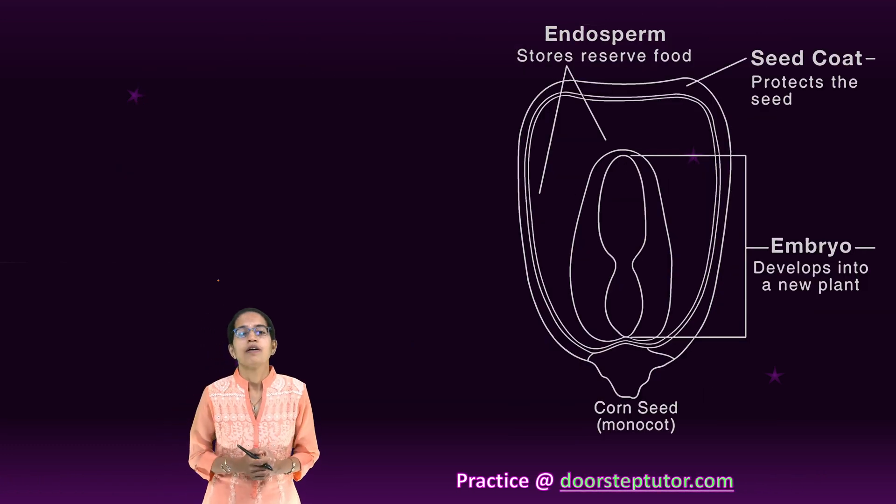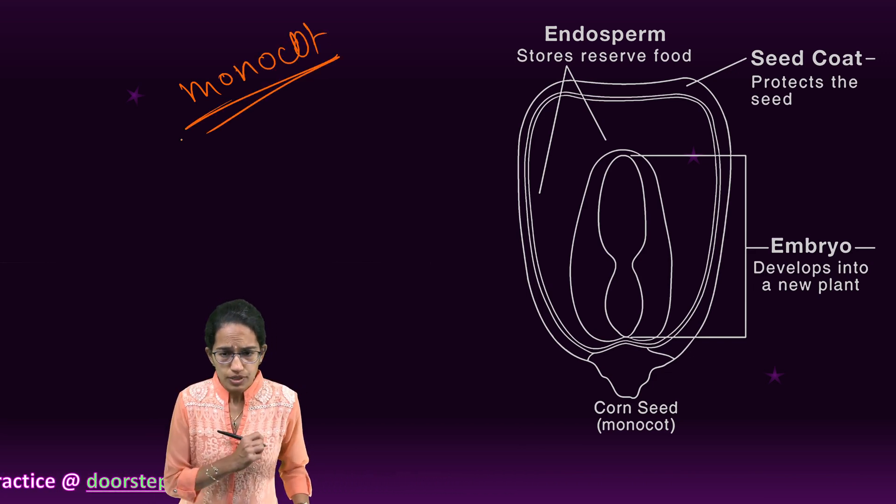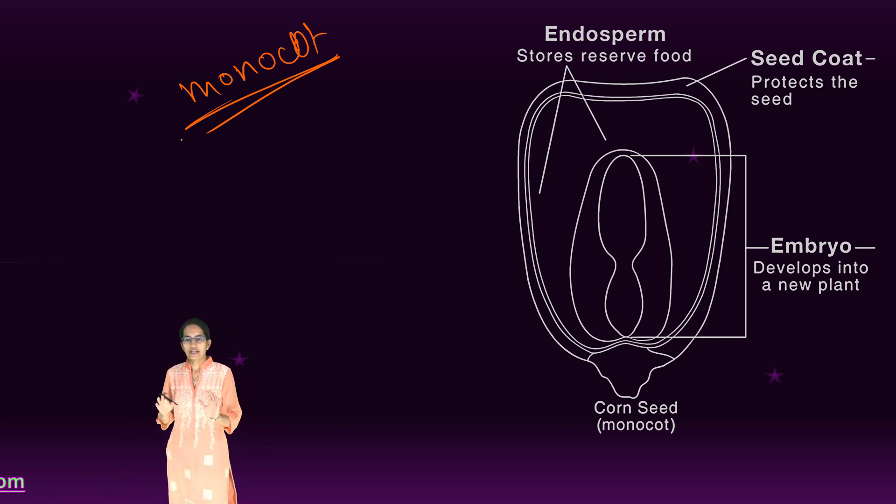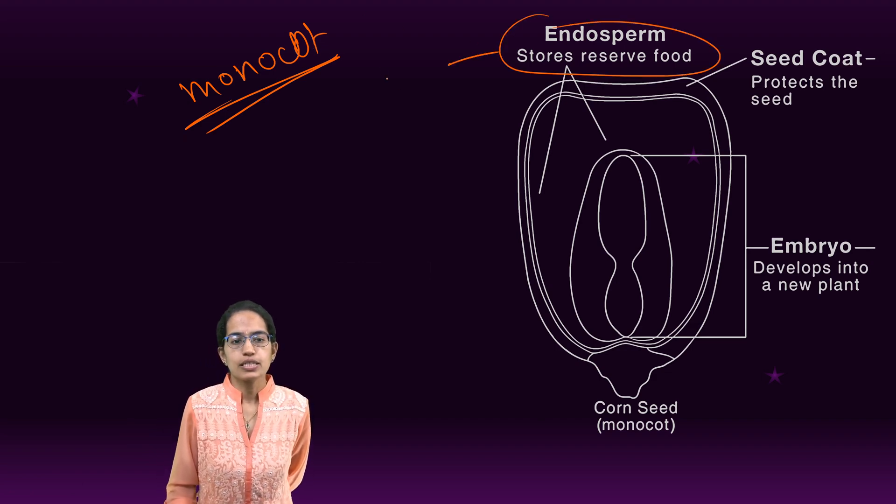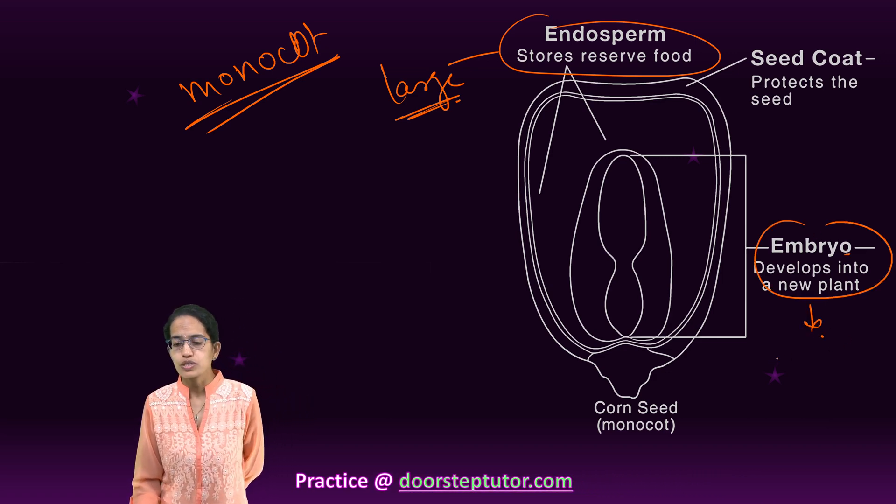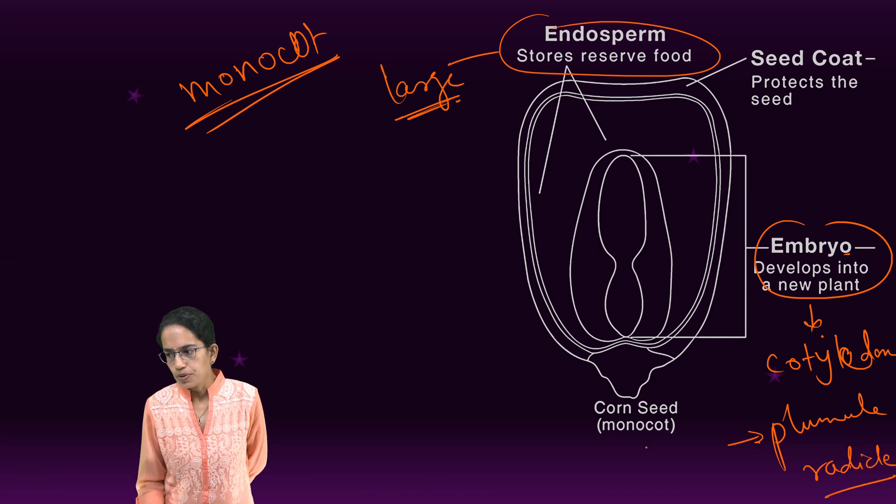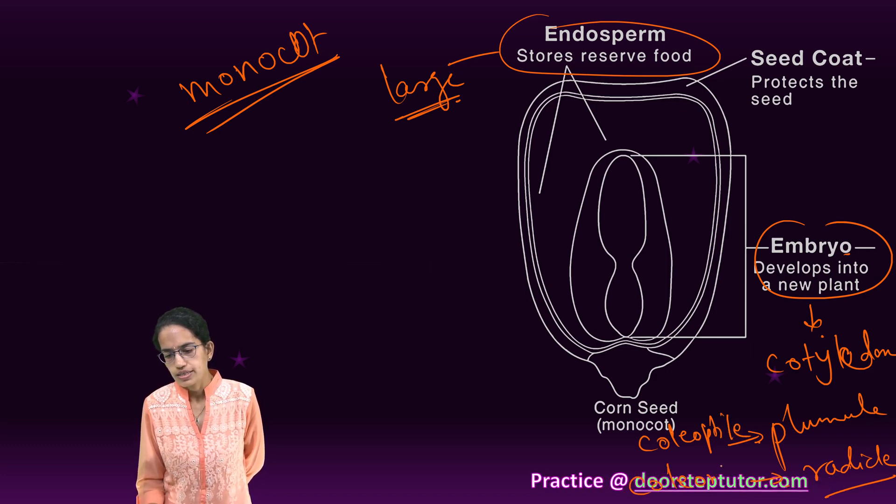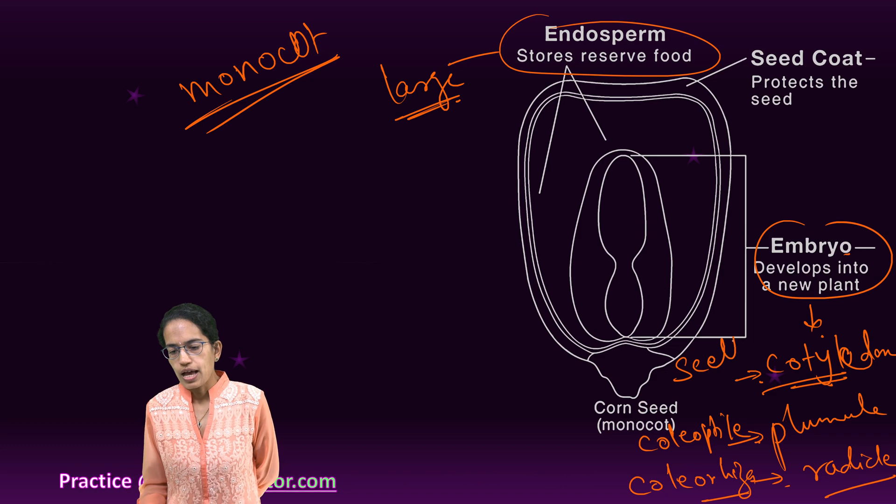The next important thing is monocot seed. Monocot seed is a classic seed. Now monocot seed we do have endosperm which is very large in contrast to a dicot seed. So endosperm is large in a monocot seed. Embryo is relatively small. And in the monocot seed, embryo is divided into cotyledon, plumule and radicle. Just three of these. The covering of the plumule is known as coleoptile. The covering of the radicle is known as coleorhiza. Then is the cotyledon. The cotyledon is also known as the scutellum.